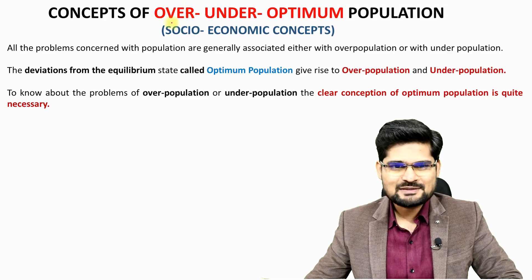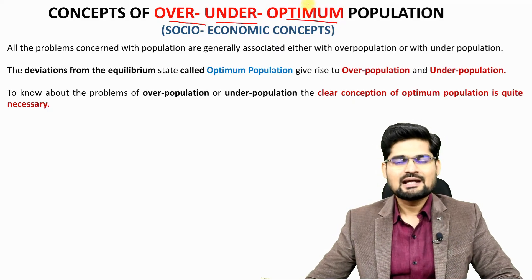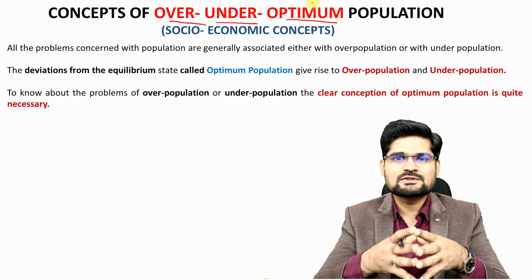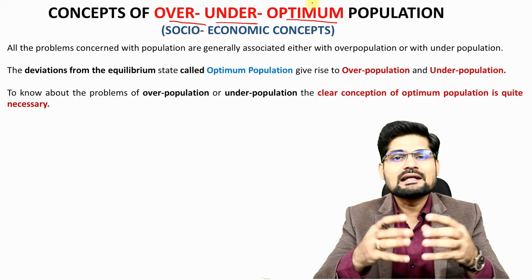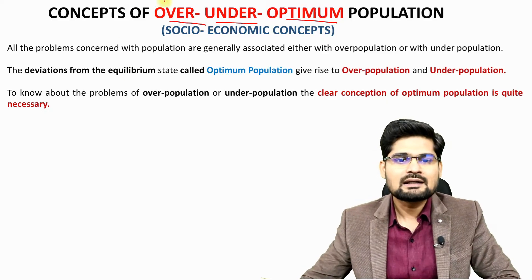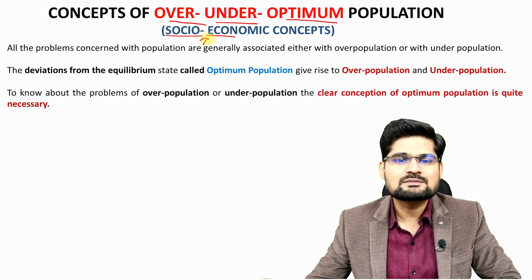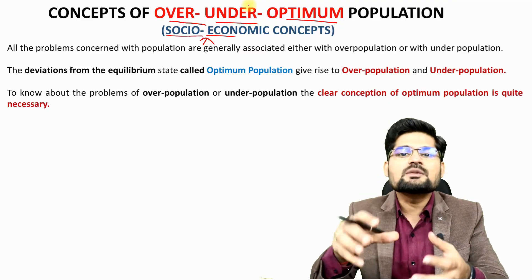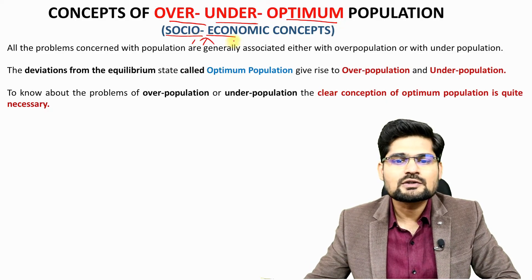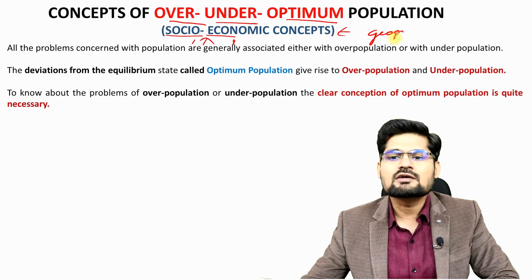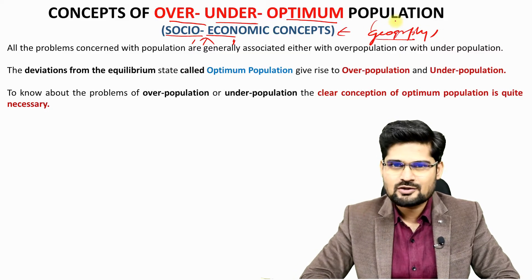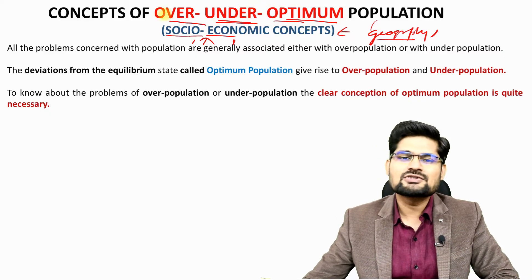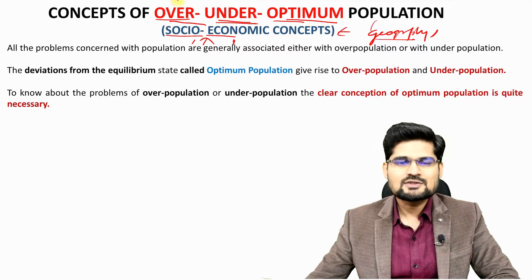Let's discuss the concepts of over, under, and optimum population. One important thing to consider is that these concepts are not just related to demography — they are interdisciplinary in nature, meaning they are also economic and social concepts. We consider them as geographical concepts when we associate them with spatial patterns and spatial phenomena. They are socio-economic concepts applied in geography.